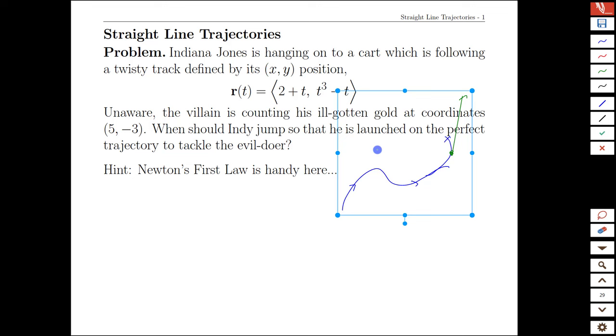Let's see how that applies in a particular context here. Indiana Jones is hanging onto a cart which is following a twisty track defined by this function here. We do know that there is a target, an arch villain, at coordinates (5, -3). So what we're wondering is, as we're moving along a track, the track is never going to go through that point. However...